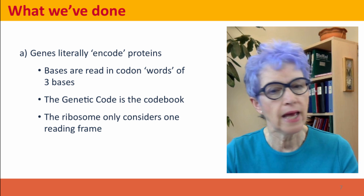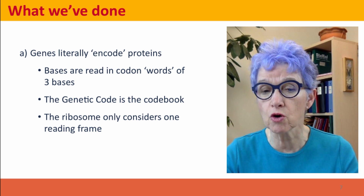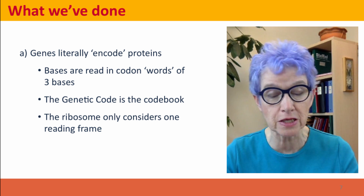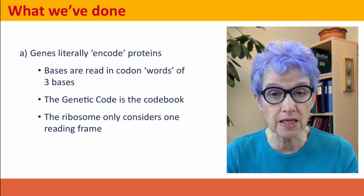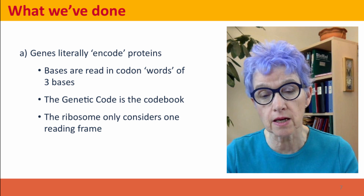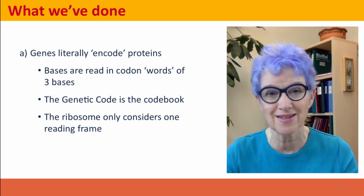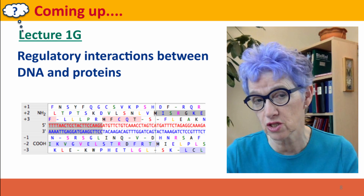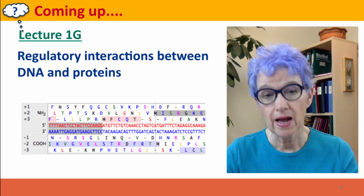We talked about reading frames and how, although there are many potential reading frames, the ribosome knows which reading frame to consider because it's only looking at a messenger RNA, not both strands of a gene. It uses a ribosome binding site and the first start codon — the first AUG in the messenger RNA — to tell it where to start. This sets the reading frame and determines how the messenger RNA will be translated. Coming up next, we'll talk more about the regulatory interactions and complications involved in genes becoming proteins.